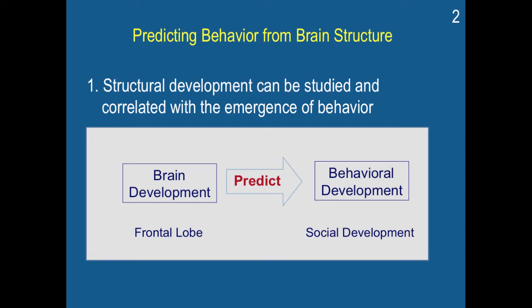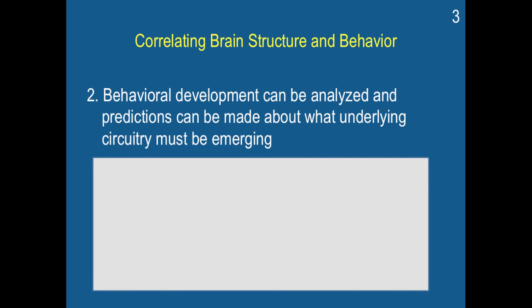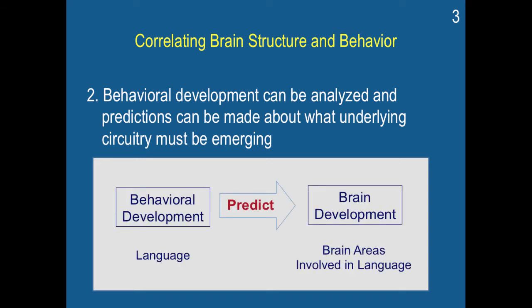Alright, so in this chapter we're going to be discussing the relationship between structural development in the brain and behavior. Structural development can be studied and correlated with the emergence of brain behavior, but it is really important to realize that the two naturally complement each other — that brain development can influence behavior, and then in turn, behavior can influence brain development. Behavioral development can be analyzed and predictions can be made about what underlying circuitry must be emerging, and this is a very common form of research that takes place in developmental psychology.